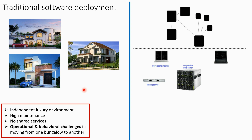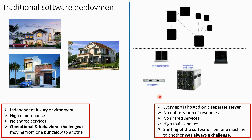Applying the same logic to the software world: in traditional software deployment before 2000, every software was hosted on separate hardware — it could be a developer's machine, an on-premise data center, or a testing server. Every app was hosted on a separate server. There was no optimization of resources, no shared services, and high maintenance was involved. Shifting software from one machine to another was always a challenge. Moving from developer machine to testing server required additional configuration, and from testing to production, the application may not run as expected.